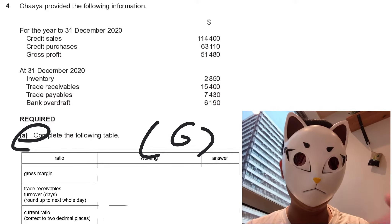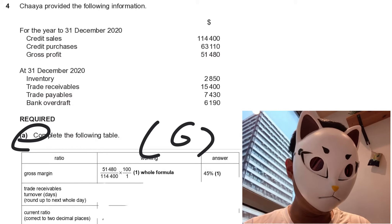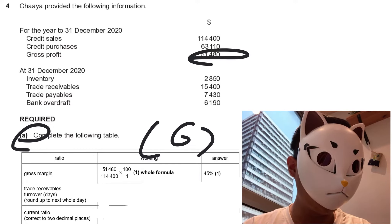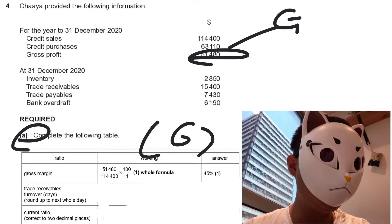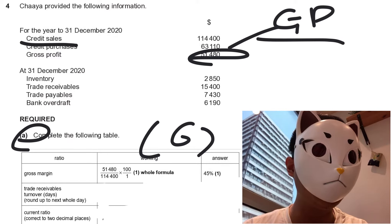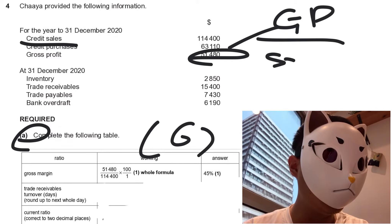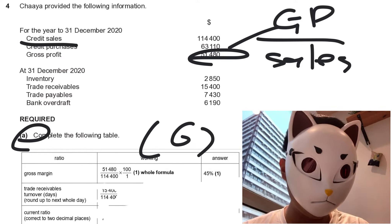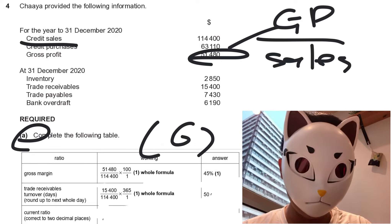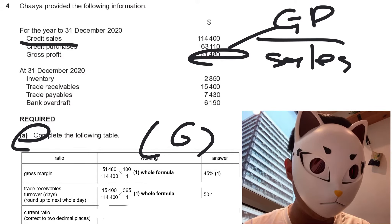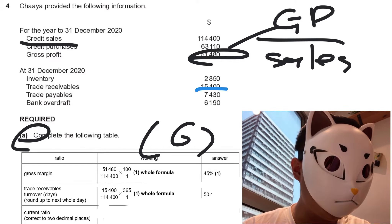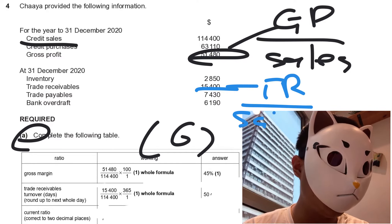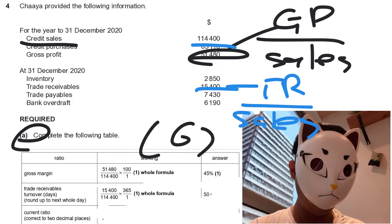For gross margin, the formula is: gross profit divided by sales. For trade receivable turnover, we use trade receivables over sales — that means divided by 114,400.